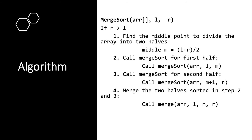Let's take a look at the algorithm. In merge sort, we check whether the right is greater than the left, then we continue by dividing the array into two equal halves. We do L plus R divided by 2 to find the middle element, then we call merge sort recursively for the first half and the second half of the array. We keep doing this until we have only one element per array, and then we merge the split elements back into a single array.